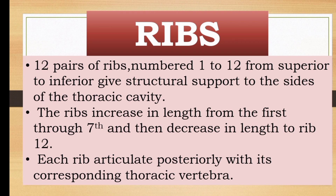Each rib articulates posteriorly with its corresponding thoracic vertebra. Rib 1 with T1, rib 2 with T2, rib 3 with T3, and so on for each corresponding thoracic vertebra.